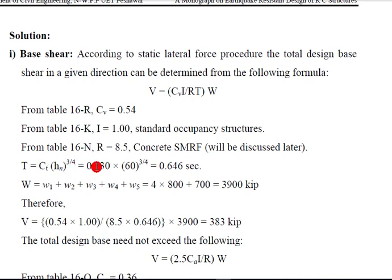So here the structure is RCC, so we take the value of CT 0.030. So here we put 0.030, HN is equal to total height of the structure which is 60 feet, into 3/4. So the T value is 0.646 seconds. Now find the W value from the figure.